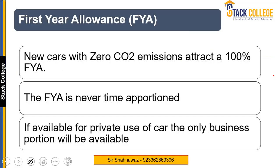The third type of allowance is FYA, or First Year Allowance. This is basically available against motor cars only, but not for all motor cars — only for those motor cars which meet certain criteria.